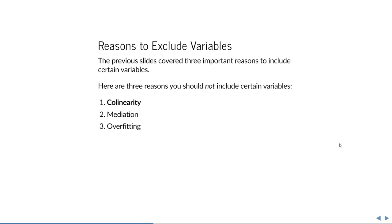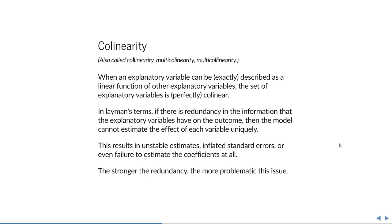We've covered three reasons why you should include certain variables, but there are also reasons why you should not. The first reason is collinearity — sometimes called multicollinearity — which means that when an explanatory variable can be described as a linear function of other explanatory variables, then that set of variables is collinear. If this relationship is exact, it is perfectly collinear.